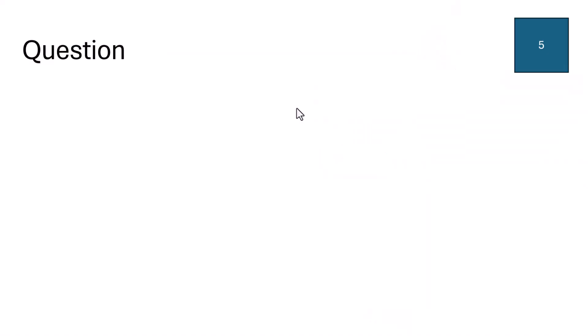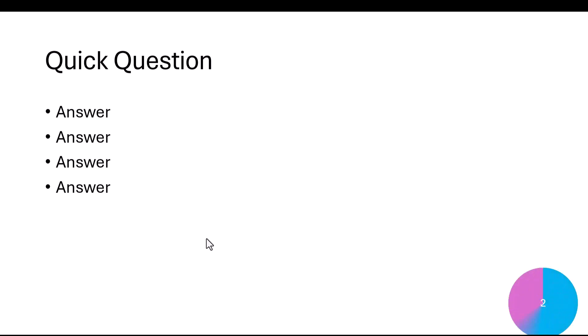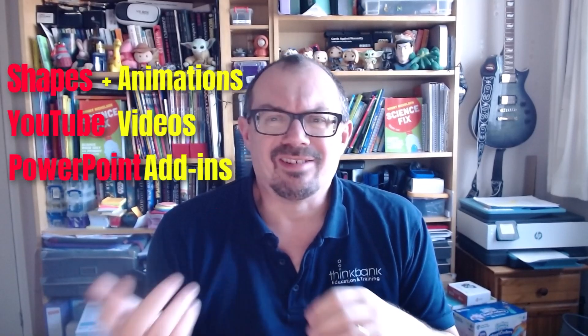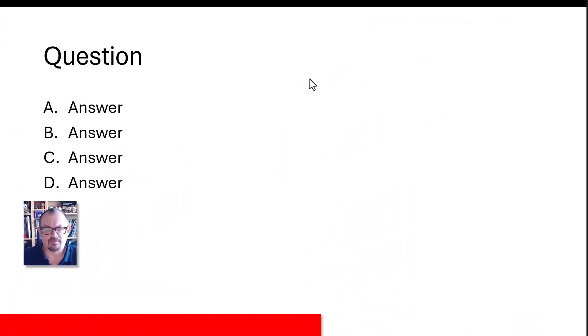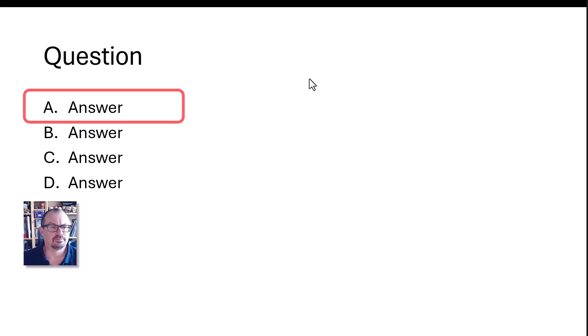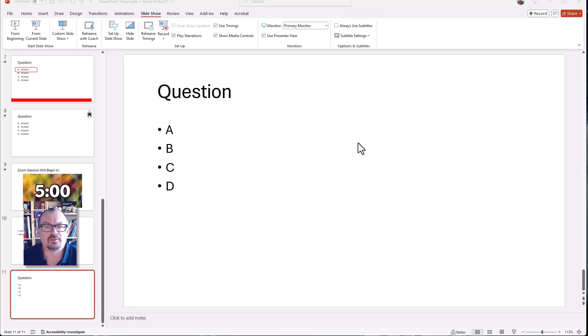If you're a PowerPoint user and you'd like to know how to add a timer to your slides, then this video is for you. There are lots of different ways you can add timers to slides in PowerPoint - you can add them by using shapes and animations, you can insert a YouTube video, and there are actually some add-ins you can use as well. In this video I'm focused firstly on shapes and animations because that's a really simple way to add a timer, where a bar slides across the screen while a question is presented to students and then an answer pops up at the end.